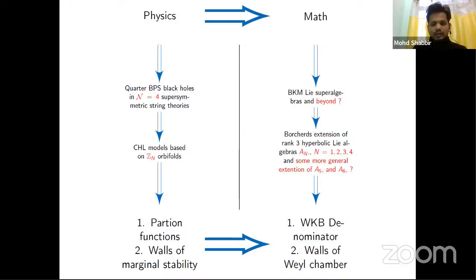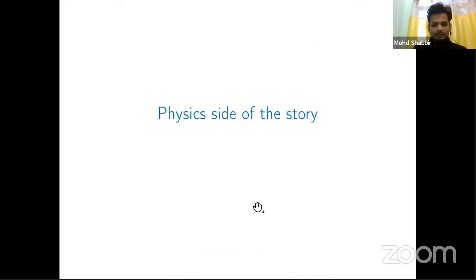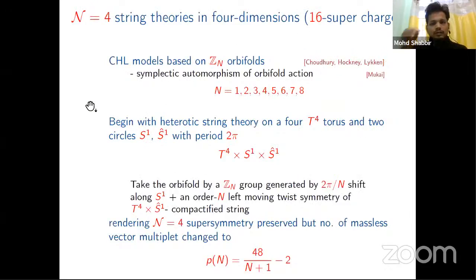Let's start with the physics side of the story. Here we start with the N=4 supersymmetric string theory in four dimensions. N=4 means 16 supercharges. We're interested in CHL models based on orbifolds, and the values of N restrict to up to eight due to modular invariance because of symplectic automorphism of orbifold action.